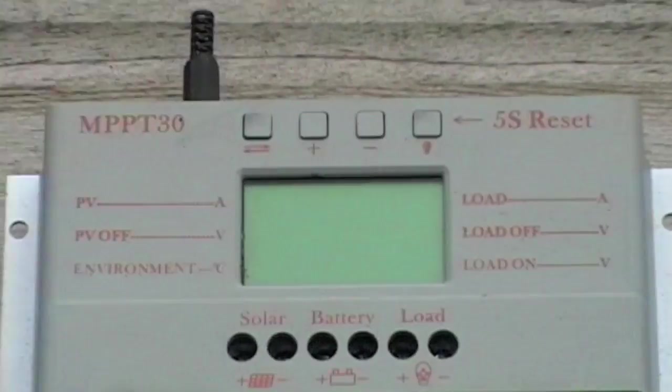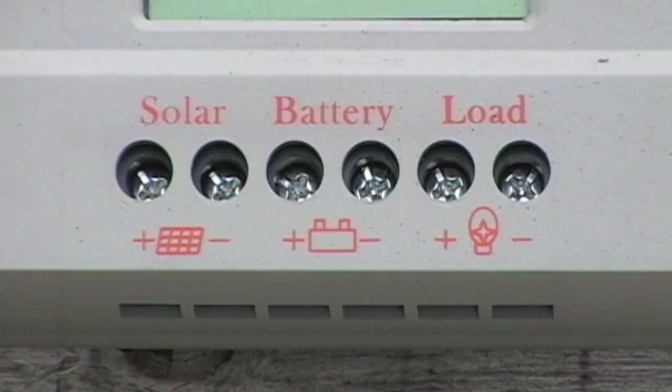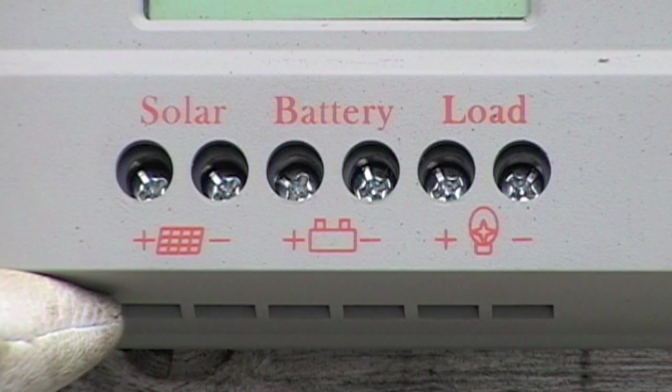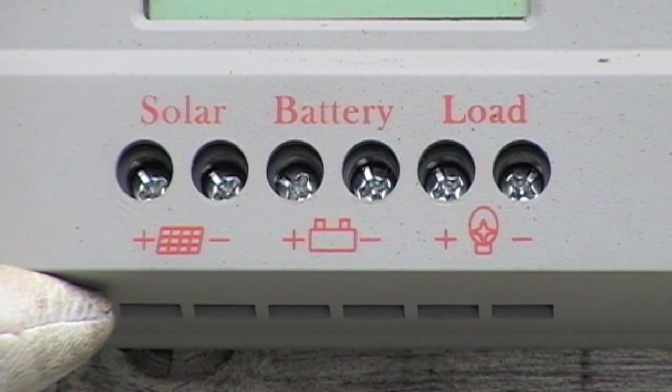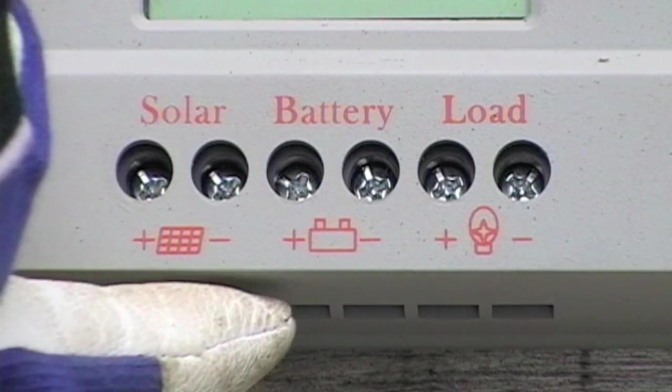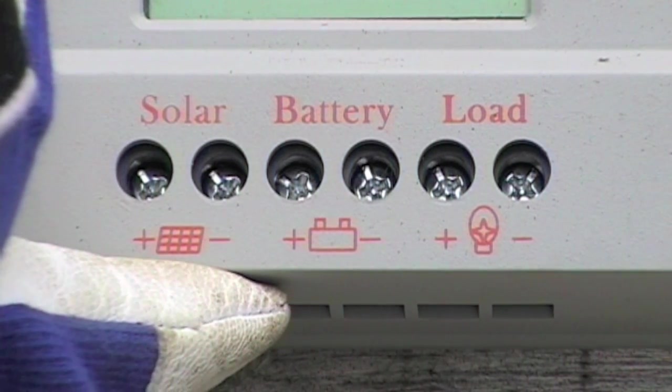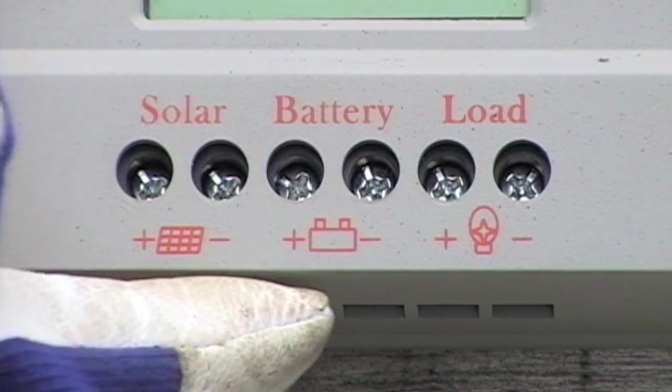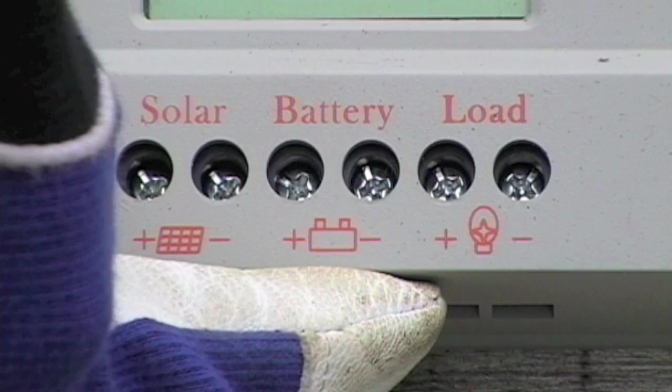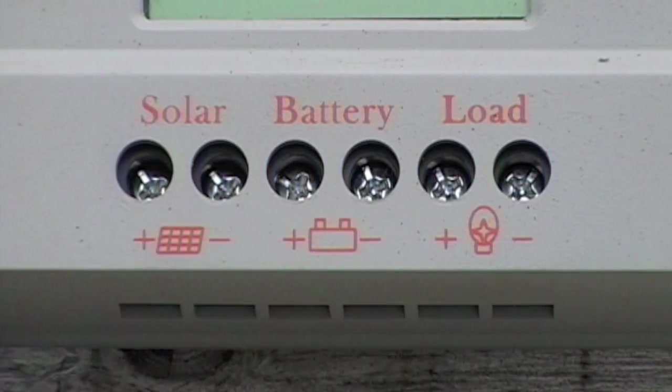I'll zoom in and show how it connects up. There are three pairs of connectors, a positive and a negative for each. A pair for connecting the solar panel, a pair for connecting the battery, and a pair for connecting the load, which for my shed will be the lights.